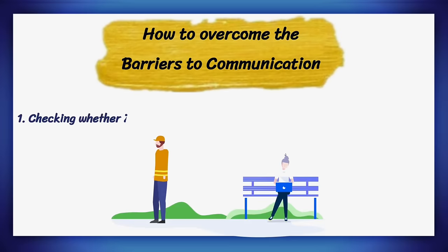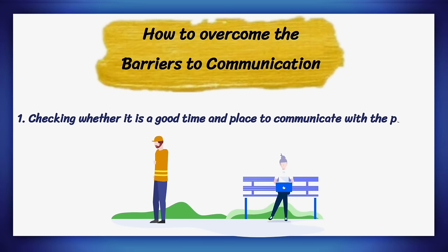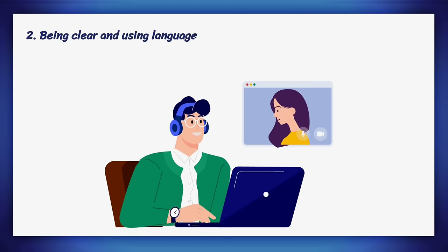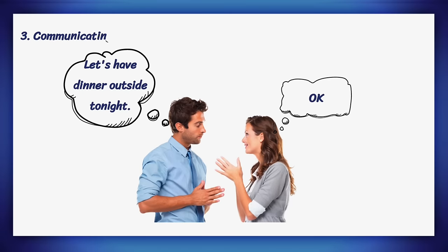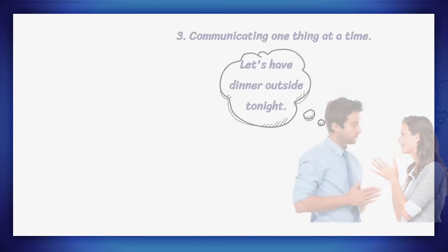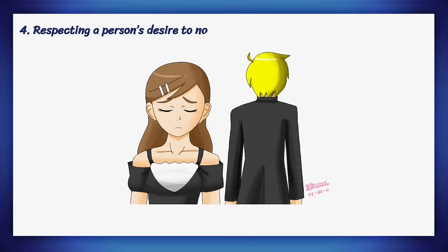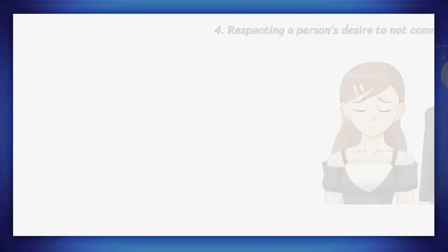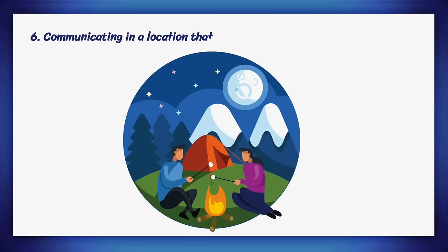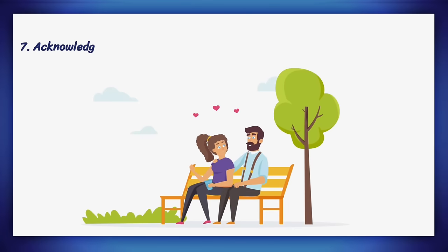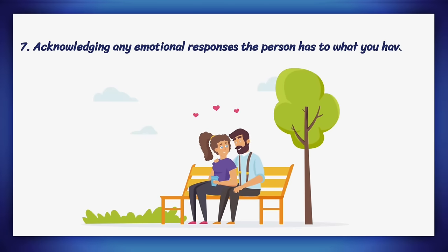Now let's discuss how we can overcome the barriers to communication: checking whether it is a good time and place to communicate with the person; being clear and using language that the person understands; communicating one thing at a time; respecting a person's desire to not communicate; checking that the person has understood you correctly; communicating in a location that is free of distractions; and acknowledging any emotional responses the person has to what you have said.